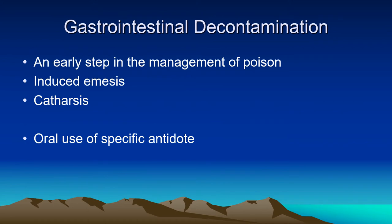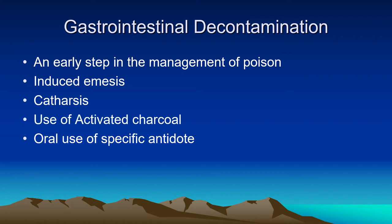In cases of poisoning, one of the major steps is gastrointestinal decontamination. It should be considered an essential early step. This decontamination includes removal of the poison by any means — for example, if there is skin exposure, the patient should be moved away and skin washed. The next step is removal of unabsorbed poison from the stomach, either by induced emesis or by use of agents such as activated charcoal, which will adsorb the unabsorbed poison.